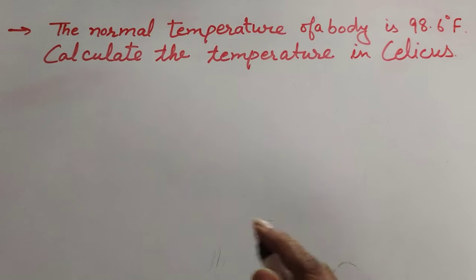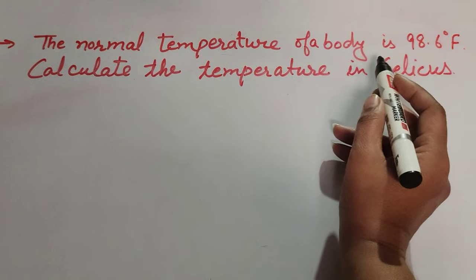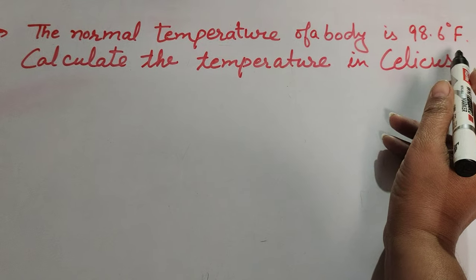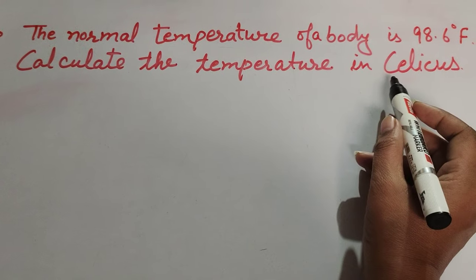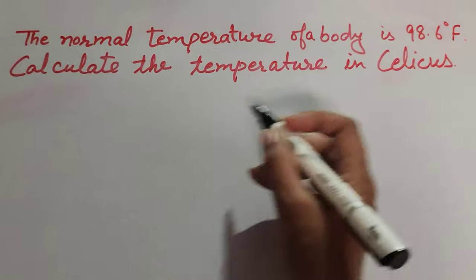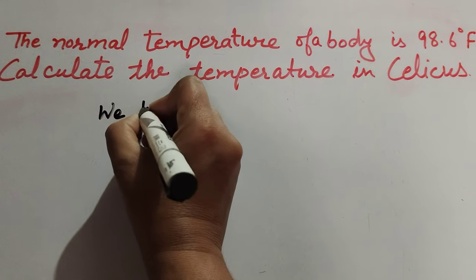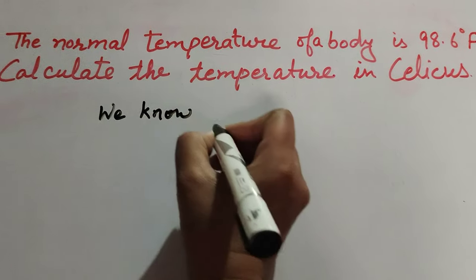Let's take an example. The normal temperature of the body is 98.6 degrees Fahrenheit. Calculate the temperature in Celsius. The given is the temperature of the body in Fahrenheit scale, so we have to calculate the temperature in Celsius.